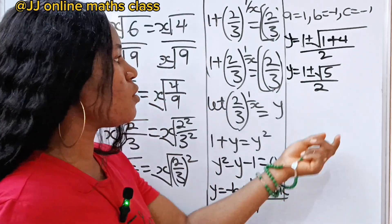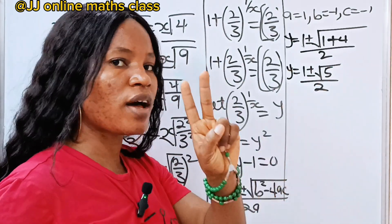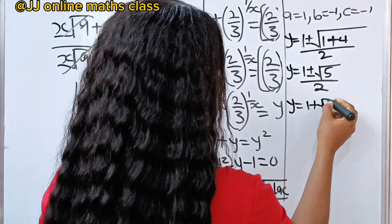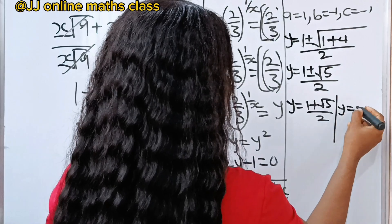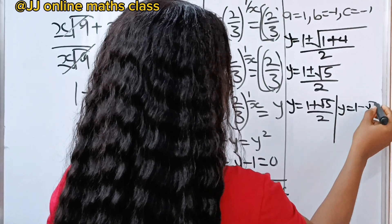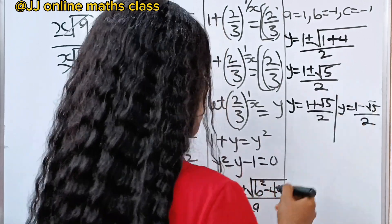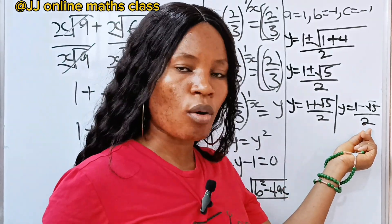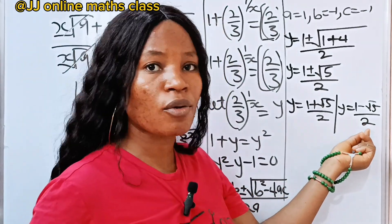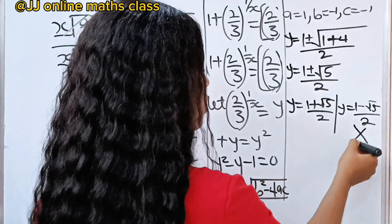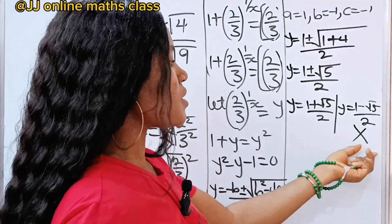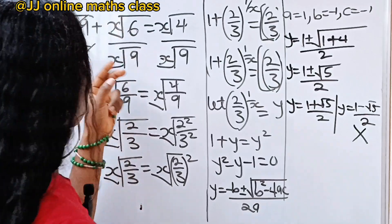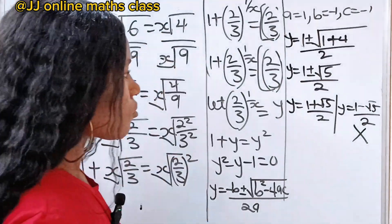Now we have two values of y: y equals 1 plus root 5 over 2, and y equals 1 minus root 5 over 2. But when you solve the second one, you are going to get a negative number — the solution will be less than 0 — which means that solution is extraneous. It is extraneous because it cannot qualify for what we have here on the board.